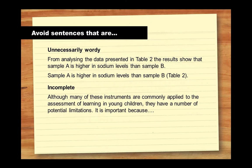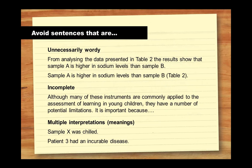Incomplete sentences make it difficult for the reader to follow your logic. In this example, it is unclear what the word 'it' is referring to at the start of the second sentence. Avoid using pronouns at the start of a sentence unless the noun it is referring to is at the end of the sentence preceding it. Sentences with multiple meanings or interpretations should also be avoided. The first sentence needs to be more specific and the word 'chilled' should be avoided as it is quite ambiguous. The second sentence, 'patient three had an incurable disease,' leaves the reader asking what disease. Don't leave your reader asking such questions.